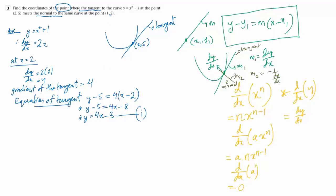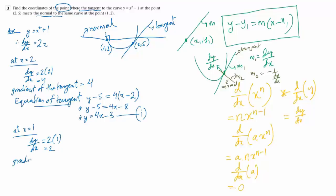Next we find the equation of the normal. The normal is drawn at the point (1, 2). Just a rough sketch — at point (1, 2) we draw the normal line at 90 degrees. We already know the gradient at point (1, 2): x equals 1, so dy/dx equals 2 times 1, which is 2. The gradient of the normal is the negative reciprocal of the gradient of the curve, so it is minus 1 over 2.